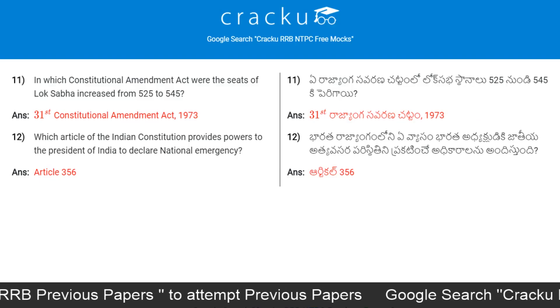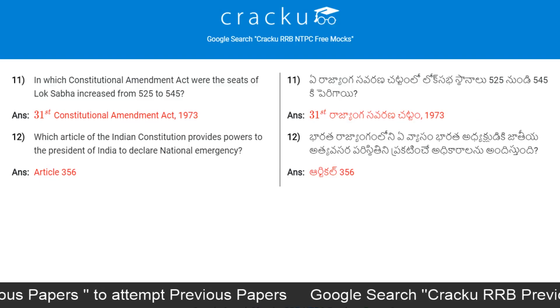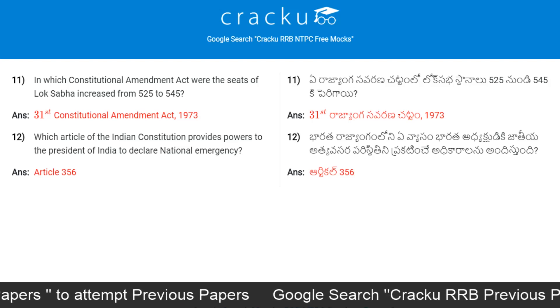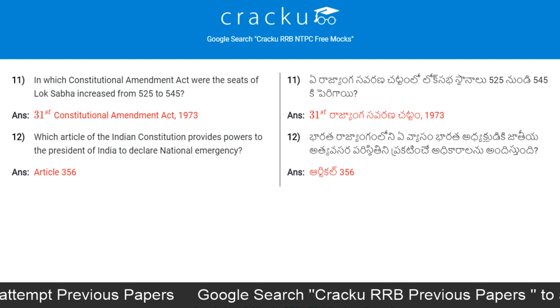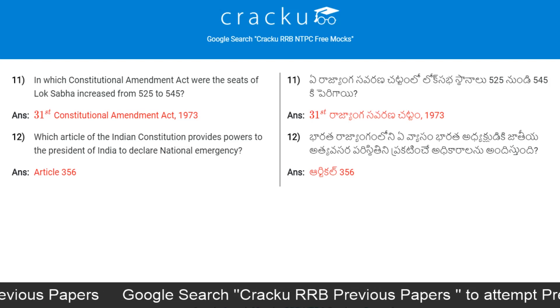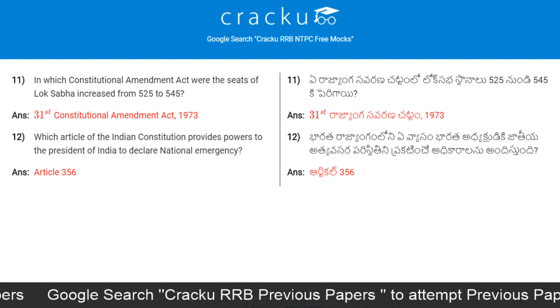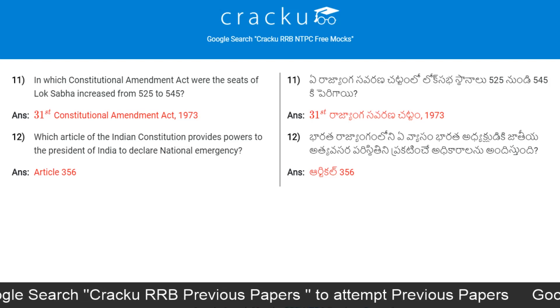In which Constitutional Amendment Act were the seats of Lok Sabha increased from 525 to 545? The answer is the 31st Constitutional Amendment Act 1973.